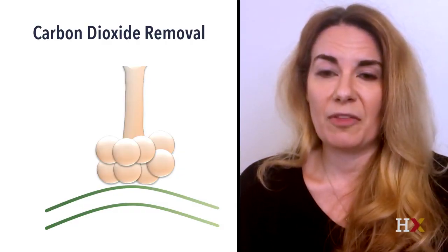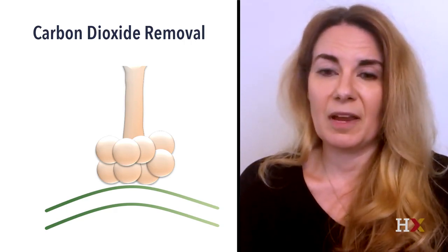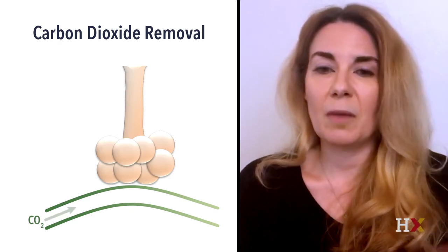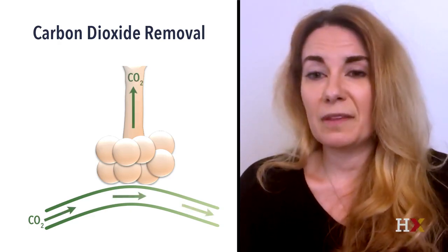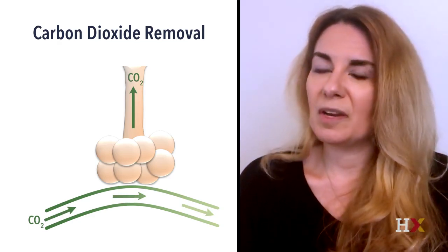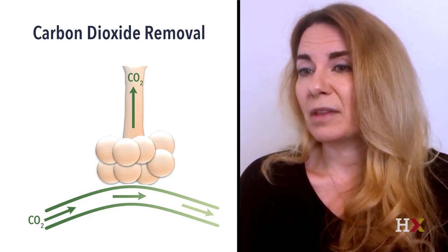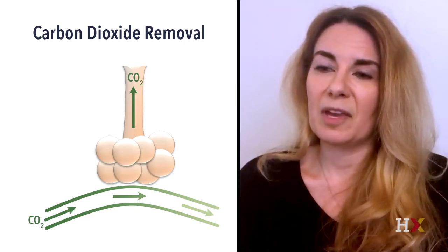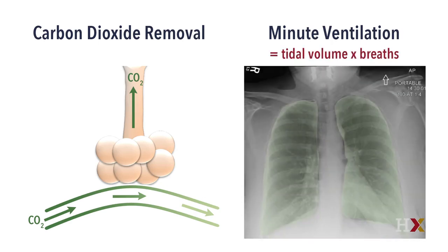Another concept to think about is the normal physiology of carbon dioxide removal. Carbon dioxide comes in and is ventilated off — this process is very efficient. The major determinant in CO2 removal is just the amount of gas that's moved through the lungs. We quantify this in mechanical ventilation as the minute ventilation: that's the tidal volume times the breaths per minute, illustrated by showing the volume in the lungs and thinking about how many times a minute it's moving in and out.